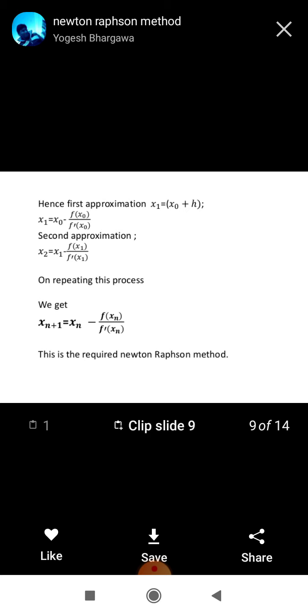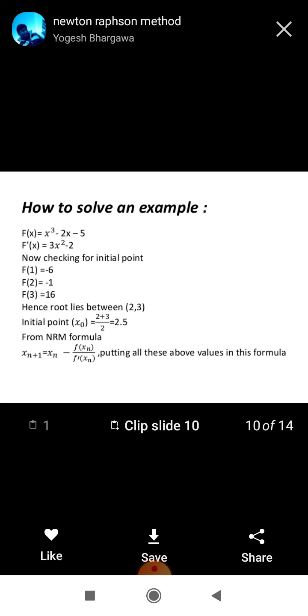So, putting the value of h, that was fx0 upon f prime x0, second approximation will be x2 equals x1 minus fx1 upon f prime x1. On repeating this, we get xn plus 1 equals xn minus fxn upon f prime xn. This is the required Newton-Raphson method.